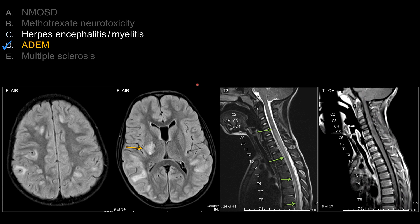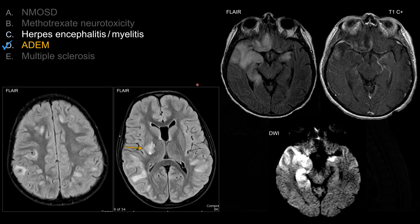For herpes encephalitis, the classic picture involves the temporal lobe, particularly the mesotemporal lobe. It is typically bilateral but often asymmetric, just like in this case. There is often a varied degree of enhancement as well as restricted diffusion, and sometimes you can see microhemorrhage. It's very important to think about this diagnosis early and treat the patient empirically before the results come back.